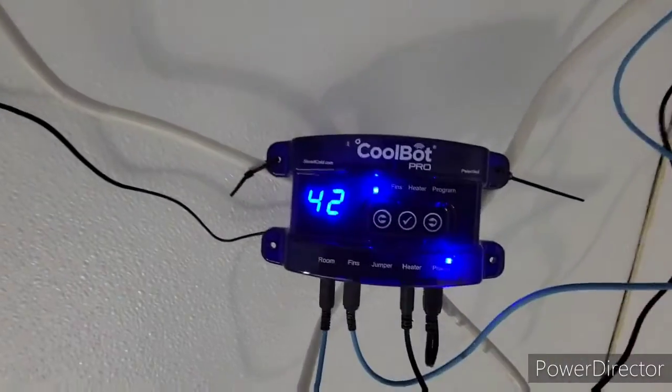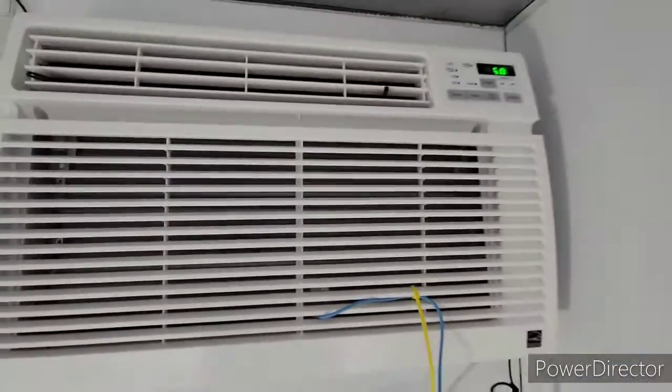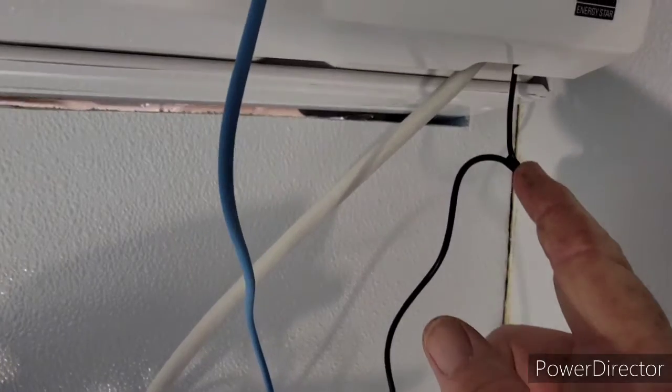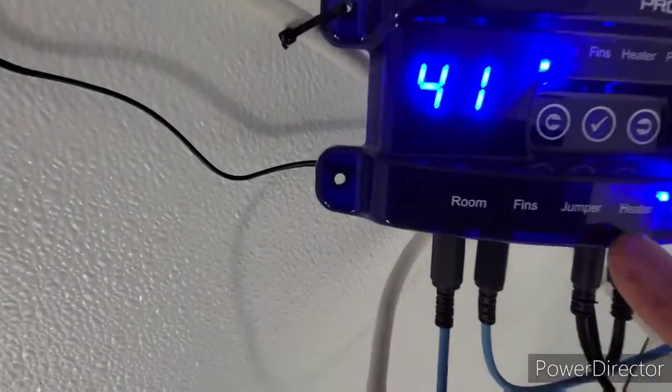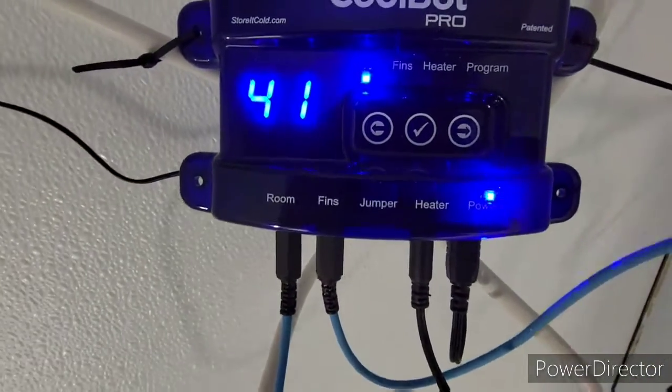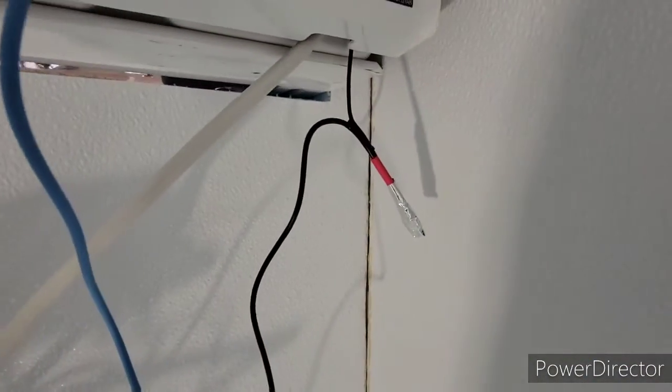I'm using a CoolBot to override the thermostat of the air conditioner. You take out this probe wire that's normally in front of the fins and tin foil a heater. The heater wire heats that probe, telling the compressor to run.